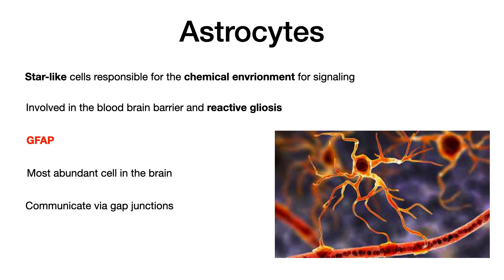Let's get started with astrocytes. Astrocytes are star-like cells responsible for the chemical environment for signaling. The primary function of astrocytes is to maintain the proper extracellular environment so that other cells in the central nervous system can carry out their jobs — they play a very supportive role. They're also involved in maintenance of the blood-brain barrier and in reactive gliosis, which refers to the changes seen in the brain after traumatic injury. You'll also see the presence of GFAP — all you need to know is that GFAP equals astrocytes.